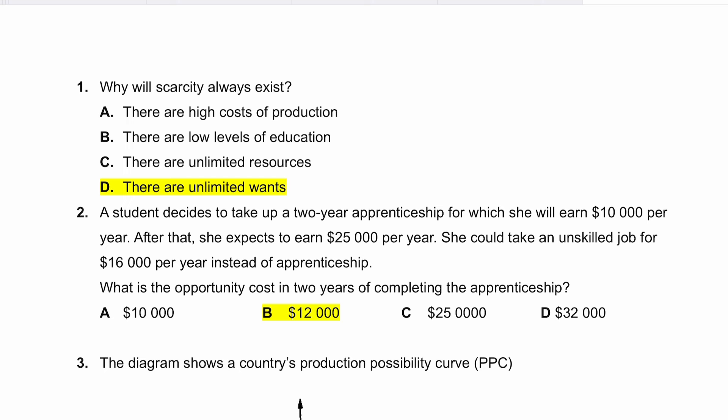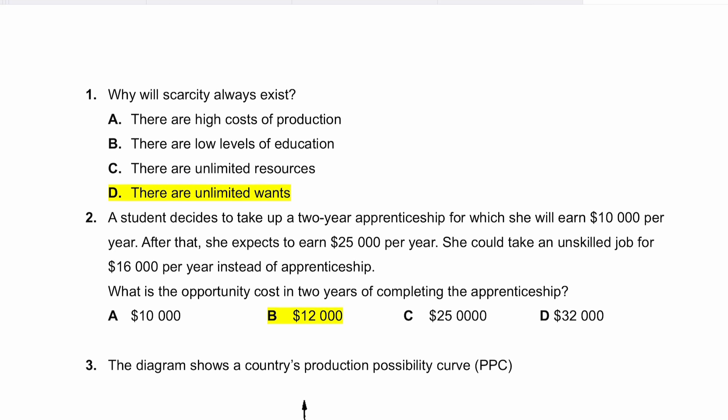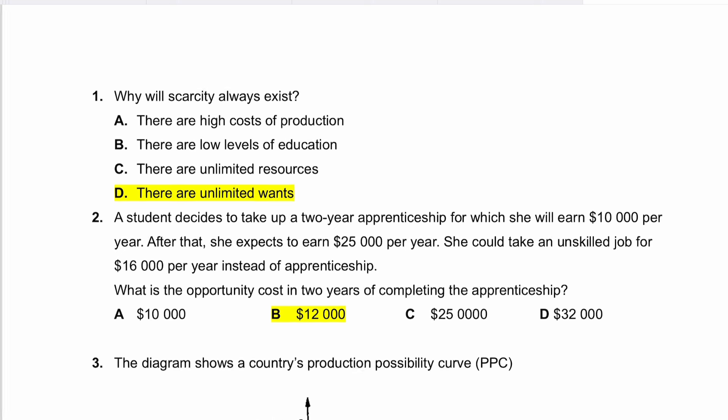Question number one asks why will scarcity always exist. The correct answer is D — there are unlimited wants, and because wants will always be unlimited, the possibility of scarcity and the basic economic problem will always exist.